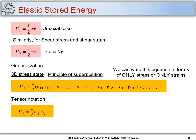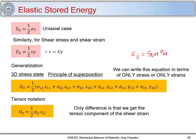We can write this equation purely in terms of stress or purely in terms of strain. Using the tensor relation εᵢⱼ = Sᵢⱼₖₗ·σₖₗ, we can write u₀ entirely in terms of stress components. The key difference to note is that here we are using the tensor component of shear strain rather than the engineering shear strain. With that, we conclude this part.